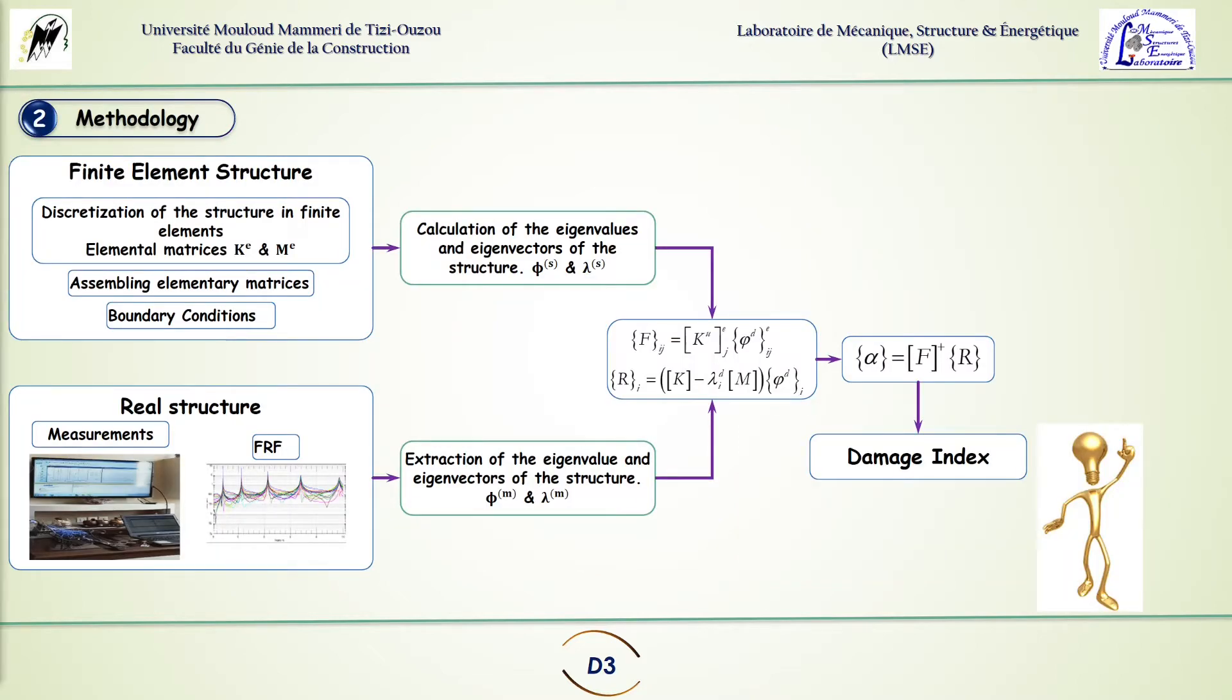This work consists of suggesting a new damage index for damage identification. We calculate the eigenvalues and eigenvectors of a structure from one side the finite element simulation of the composite plate and from the other side the real experimental setting.